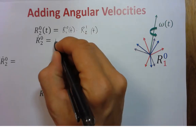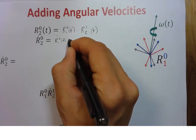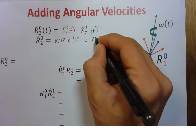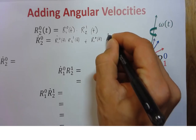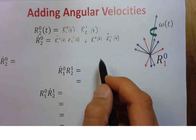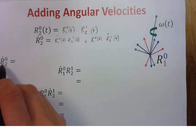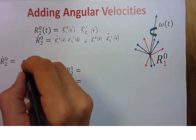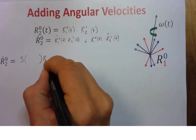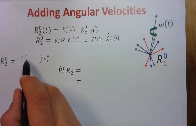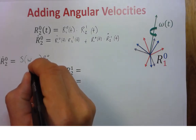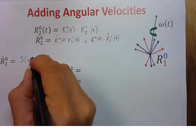Applying the chain rule gives us R-dot_{1,0}(t) times R_{2,1}(t), plus R_{1,0}(t) times R-dot_{2,1}(t). For R-dot_{2,0}, by our definition that is a skew-symmetric matrix times R_{2,0}, where the angular velocity we are rotating around is omega from 0 to 2 in frame 0.